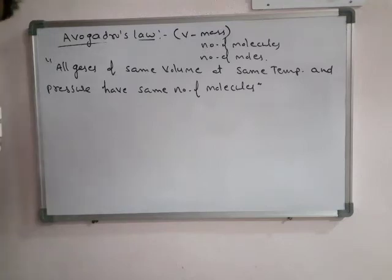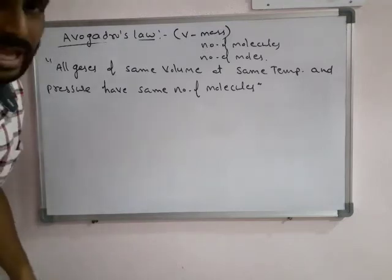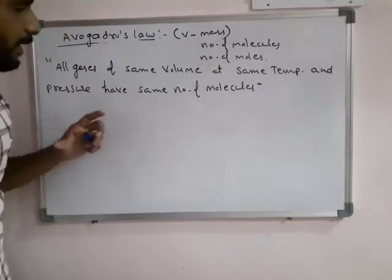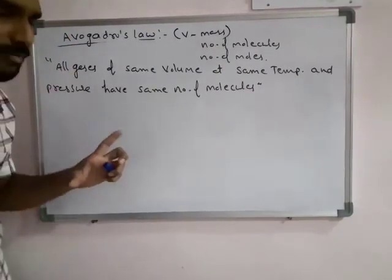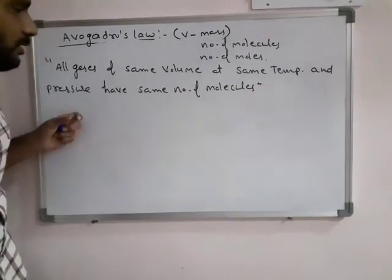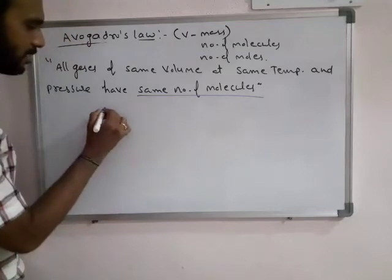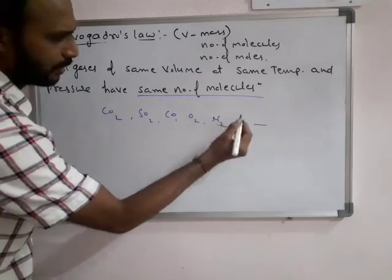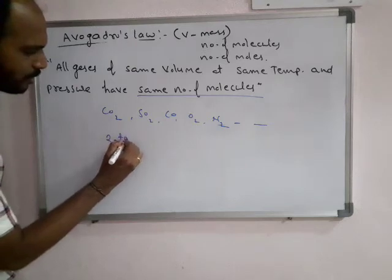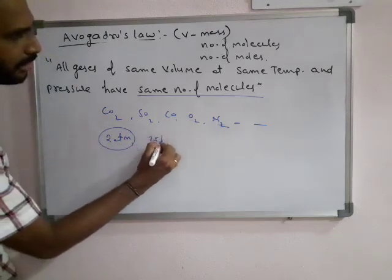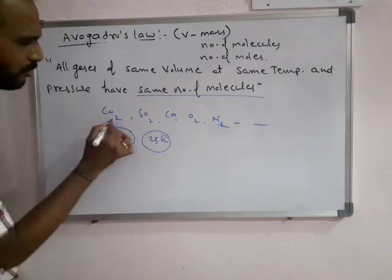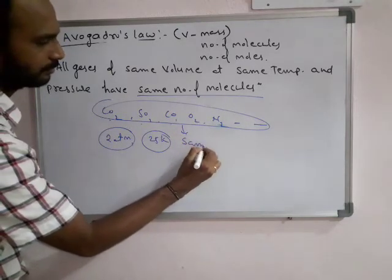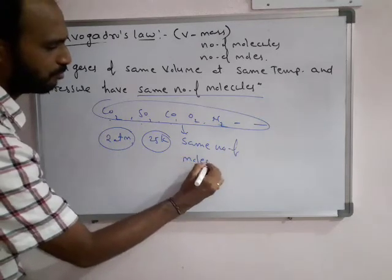We are comparing the volumes of different gases under the similar condition that they are present at the same temperature and pressure. Different gases — if you take any of the gases such as CO2, SO2, carbon monoxide, O2, N2, whatever the gas — if they are present at the same temperature and pressure, they all contain the same number of molecules.